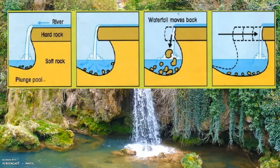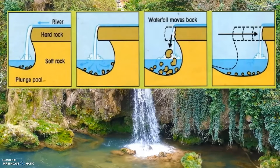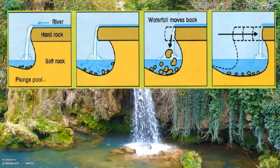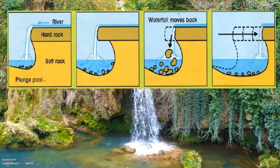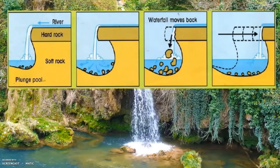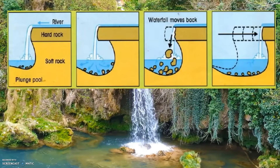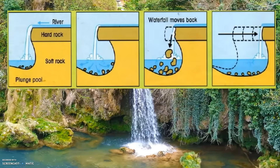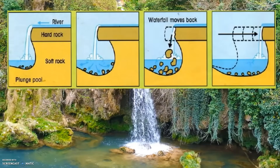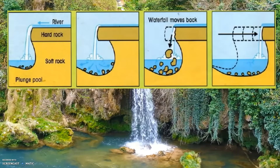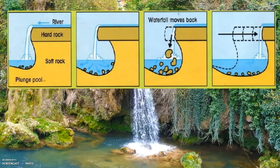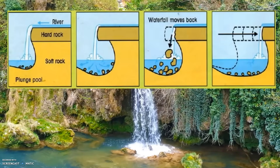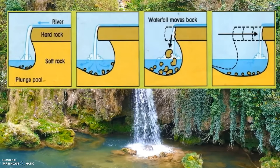As water flows over the step it erodes more and more of the softer rock. A steep drop is eventually created, which is called a waterfall. The hard rock is eventually undercut by erosion — it becomes unsupported and collapses, like the third image. The collapsed rocks are swirled around the foot of the waterfall where they erode the soft rock via abrasion, creating a deep plunge pool.